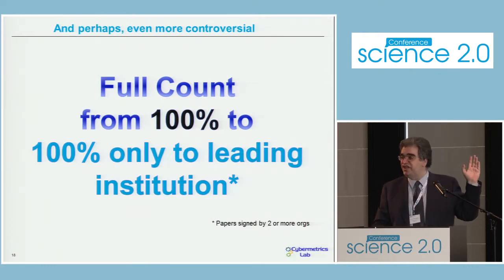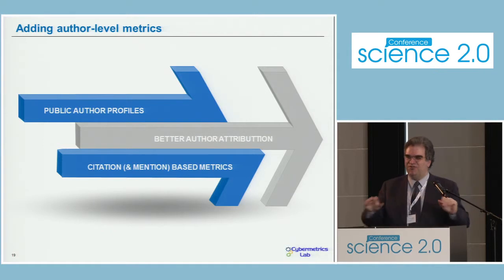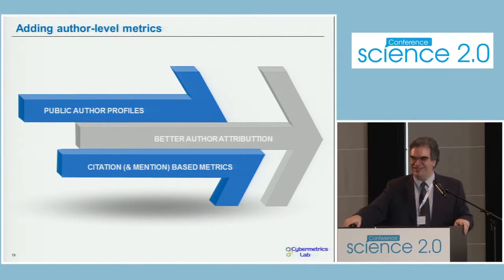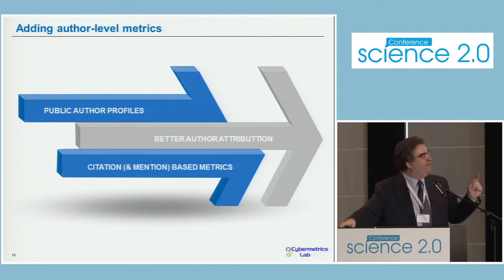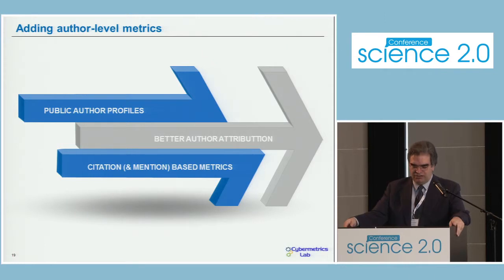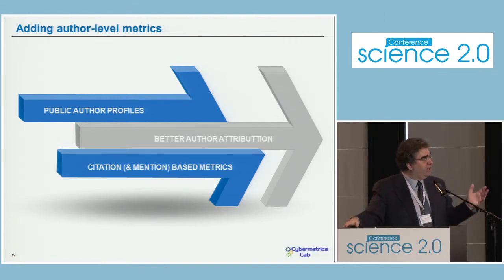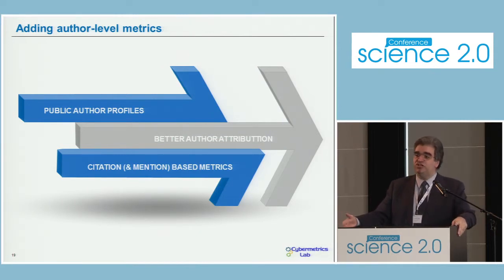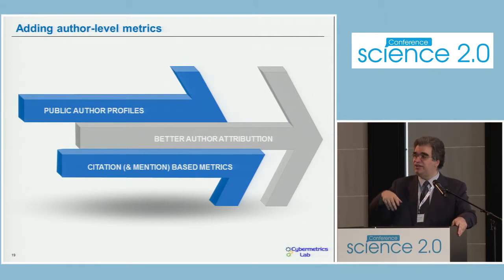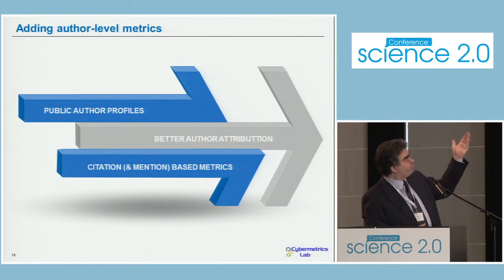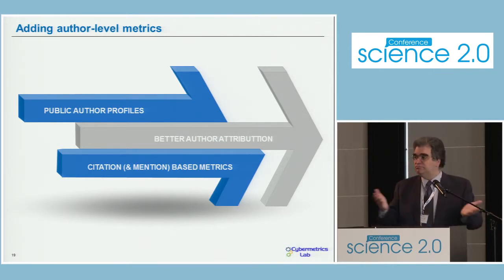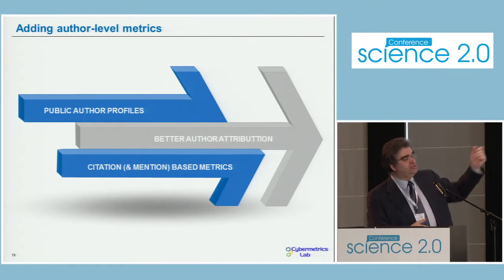Perhaps we can consider the same approach for institutions, but perhaps that is too far. For me, the most important development now is author-level metrics and profiling. Profiling was not technically possible before — I am referring to the whole European Union or the whole world — but now the situation has changed. Now it is really possible to have profiles for every scientist in the world, not only the current ones but also the old ones. We need these profiles to be public.